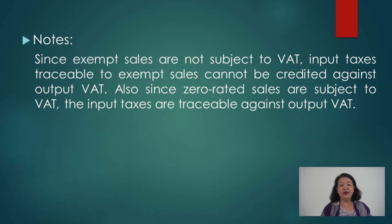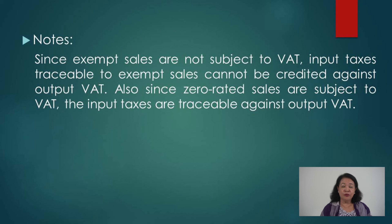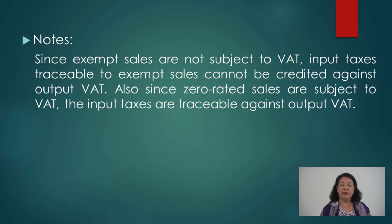For zero-rated sales you have three options for the input tax: use it against your output tax, claim it as a tax credit certificate, or claim a refund. With a refund, the money is returned to you. With a TCC, you receive a certificate for the amount of overpayment or input tax paid on zero-rated purchases. When used against output VAT, it must be reported in your VAT returns and properly recorded in your books — the input tax must be accounted for in relation to the zero-rated sale.